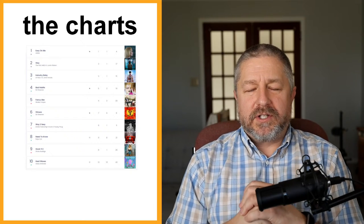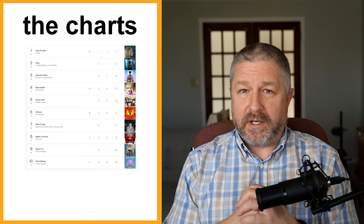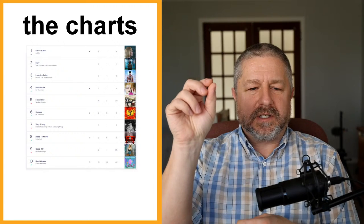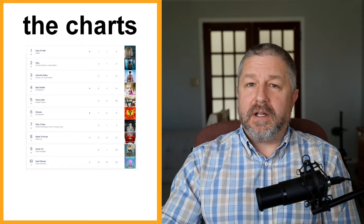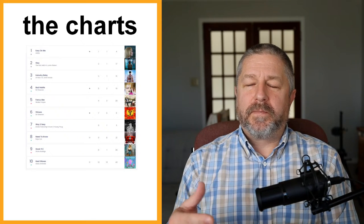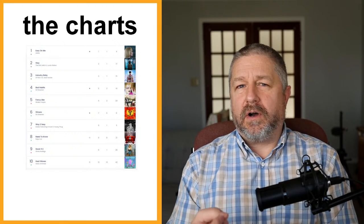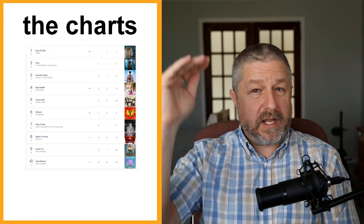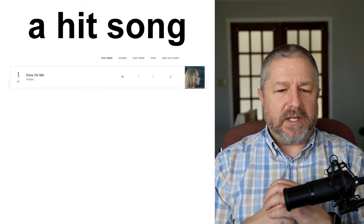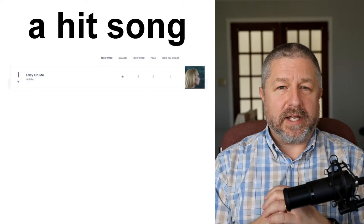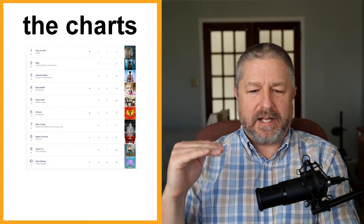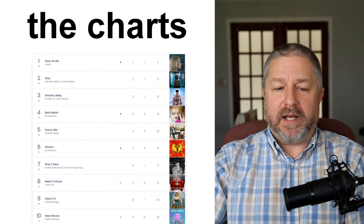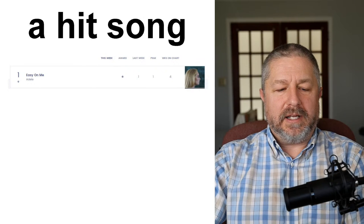There's something called the charts — a song can be on the charts. The most common chart is called the Billboard 100, a chart in the United States that ranks the most popular songs. You could say Adele has a new song on the charts, or Adele's song is number one on the charts. The charts simply refer to which songs people have listened to, downloaded, and requested — ranked from most popular to less popular. Right now I think Adele has a hit song called 'Easy On Me' and it's number one on the charts.